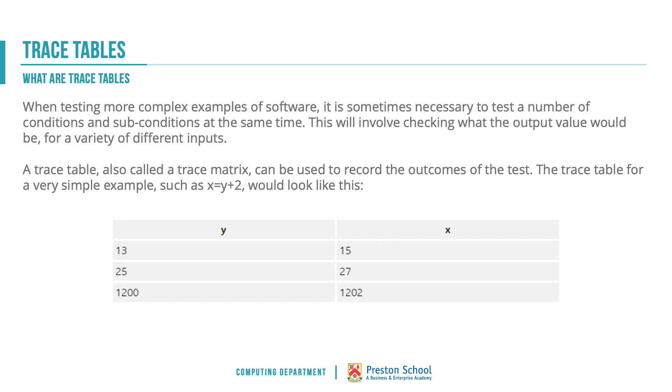Let's think about the algorithm or the formula x equals y plus 2. Our trace table would look something like this example on the board. In y we would put a number of test values: 13, 25 and 1200. We would then run our program and check is x, is the answer, where we would expect that to be. We can see from this example that looks fairly right. x equals y plus 2, 13 plus 2 does indeed equal 15.